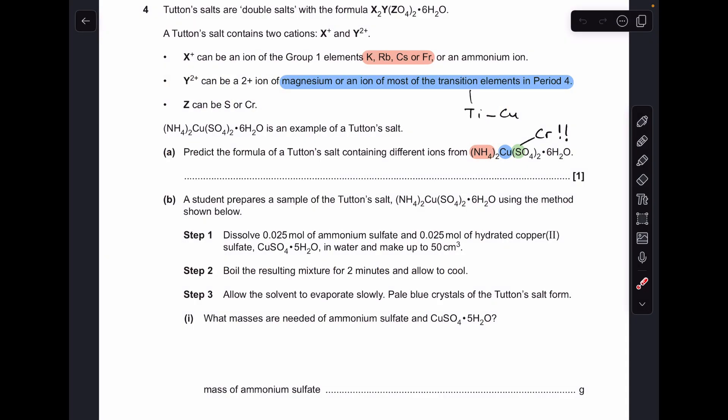For part A, I've just highlighted the key bits of information about these Tutton salts in the three bullet points. We've got to use, for this part here, one of these. For the metal, we've got to use magnesium or an ion of most of the transition elements.